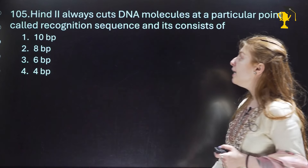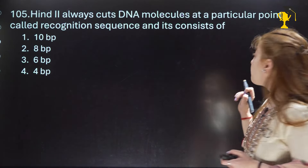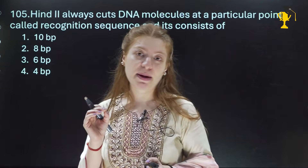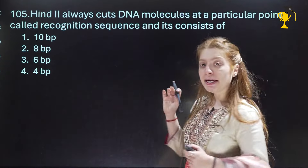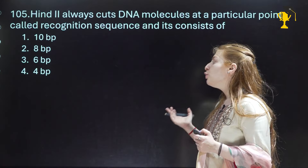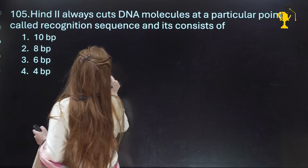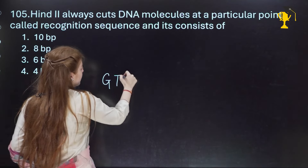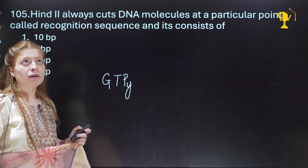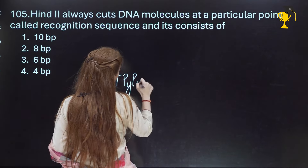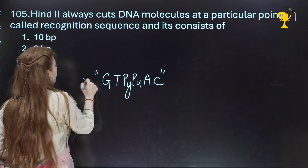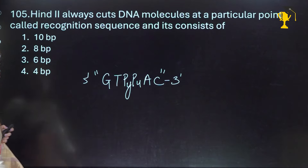Question 105: 'HindII always cuts the DNA molecule at a particular point called the recognition sequence, and it consists of?' HindII's recognition sequence is 6 base pairs. It recognizes and cuts at that 6-base-pair site. Even if you didn't remember the exact sequence, you should at least know it is a 6-base-pair cutter. The sequence is GT, then a pyrimidine (thymine or cytosine), then a purine (adenine or guanine), then AC — a 6-pair sequence. So the answer is Option 3 — 6 base pairs.